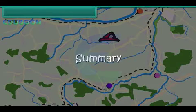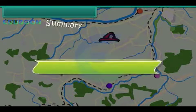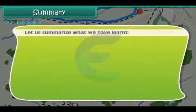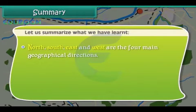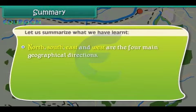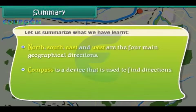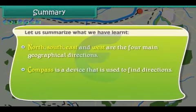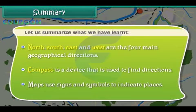Let us summarize what we have learned. North, South, East and West are the four main geographical directions. A compass is a device that is used to find directions. Maps use signs and symbols to indicate places.